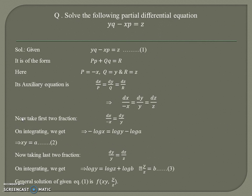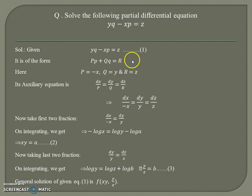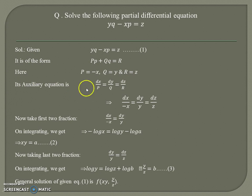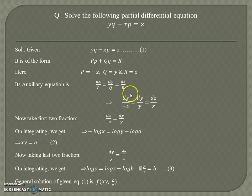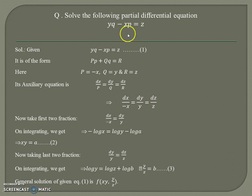Now we solve the partial differential equation yq − xp = z. This is of the form Pp + Qq = R, which is Lagrange's linear equation. Comparing, we get P = −x, Q = y, and R = z. The auxiliary equation is dx/P = dy/Q = dz/R, that is dx/(−x) = dy/y = dz/z. This is the auxiliary equation of the given PDE.